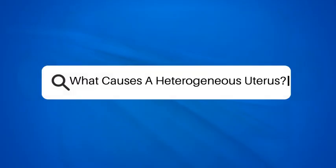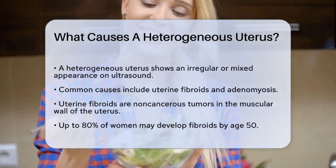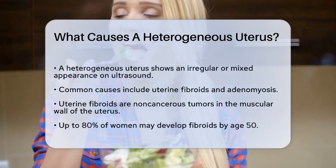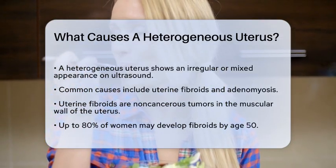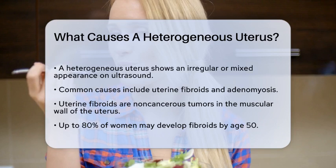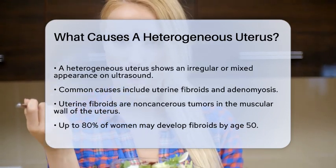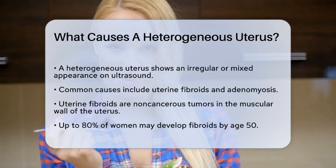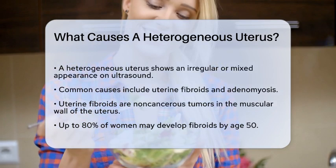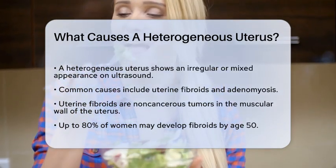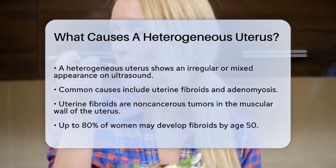What causes a heterogeneous uterus? If you've ever wondered why your uterus might appear heterogeneous on an ultrasound, you're not alone. Let's break down what this means and the common causes behind it. A heterogeneous uterus refers to an irregular or mixed appearance of the uterine tissue when viewed on an ultrasound. This can be due to several factors, but two of the most common causes are uterine fibroids and adenomyosis.